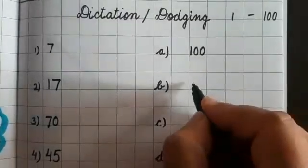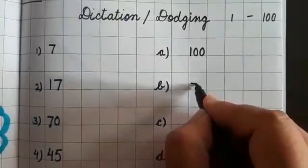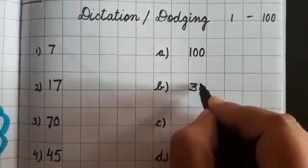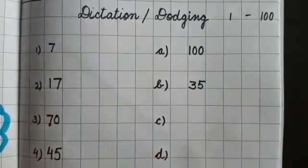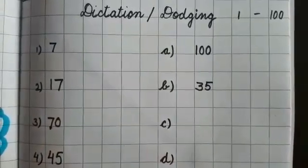Now write down 35. 35. Listen carefully and write down. 35. Yes.